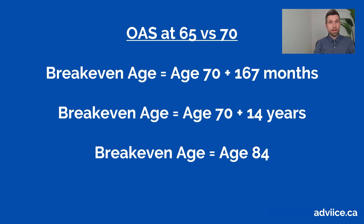Age 84 is quite a bit higher than the breakeven age for CPP, so again this is why if we're going to delay any benefit it's usually going to be CPP instead of old age security. This was a simple OAS breakeven analysis that didn't include the impact of investment returns, so now let's go through a more detailed calculation where we include that impact.